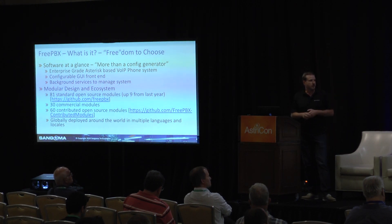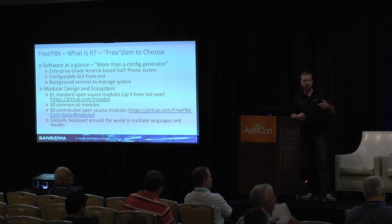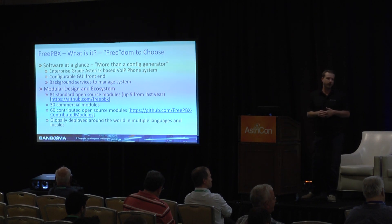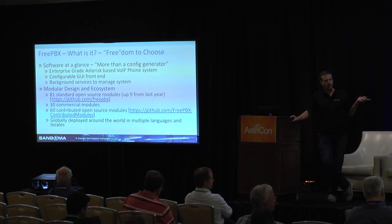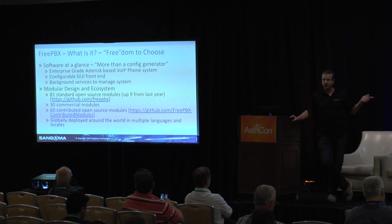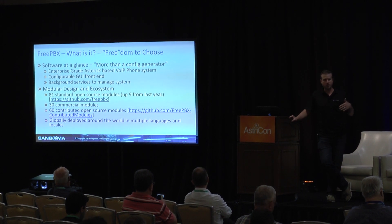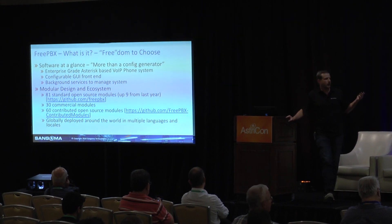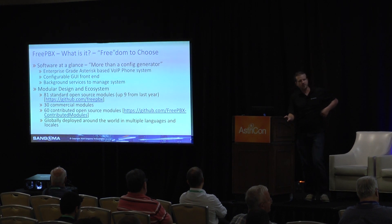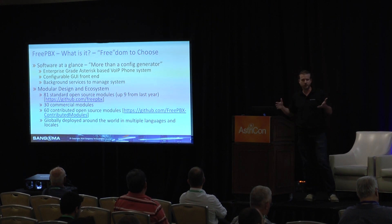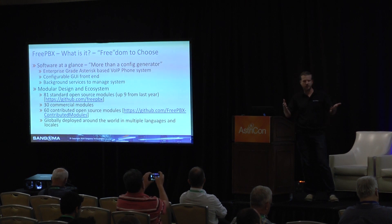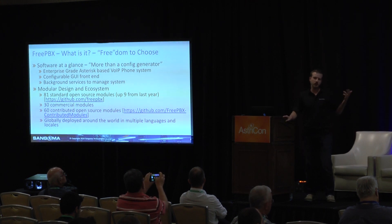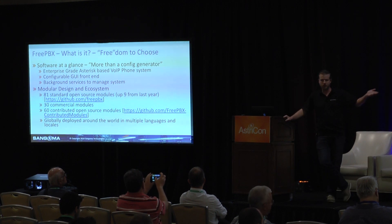There are 81 standard open source modules. You can actually see the source code on github.com/FreePBX, which is mirrored from our own Git server at git.freepbx.org. There are only 30 commercial modules. FreePBX is a modular system — about 128 modules altogether, and more added every year. There are also 60 contributed open source modules: modules that people in the community built over the years and contributed, but no longer actively maintain. You can see the source code of all those modules.